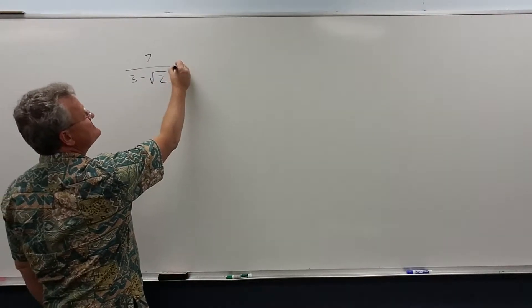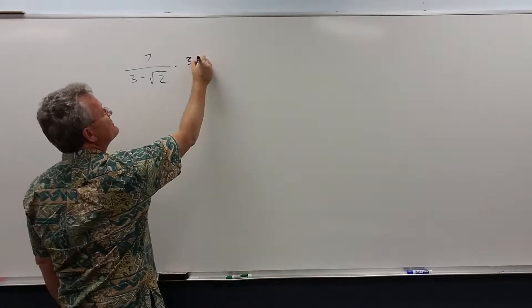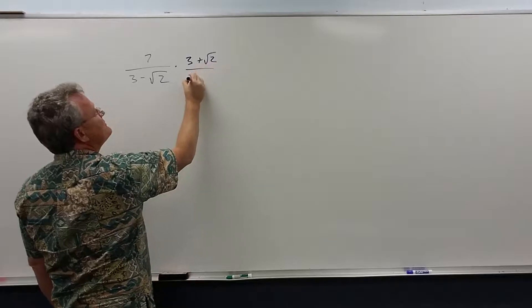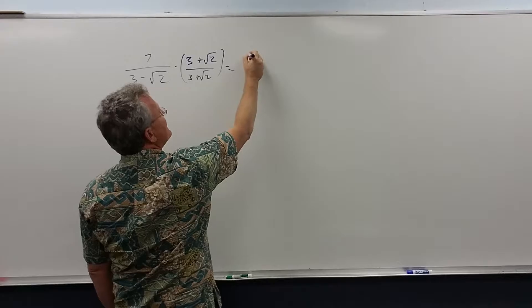to rationalize the denominator we multiply by the conjugate of the denominator which is 3 plus the square root of 2. And when we multiply this, I'm going to wait to distribute the 7.